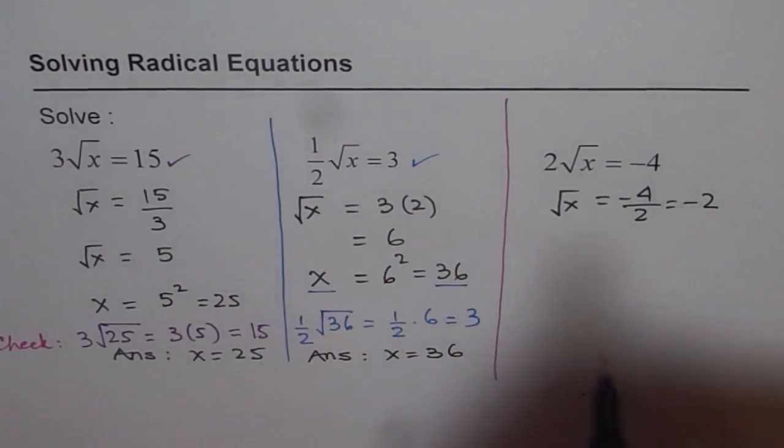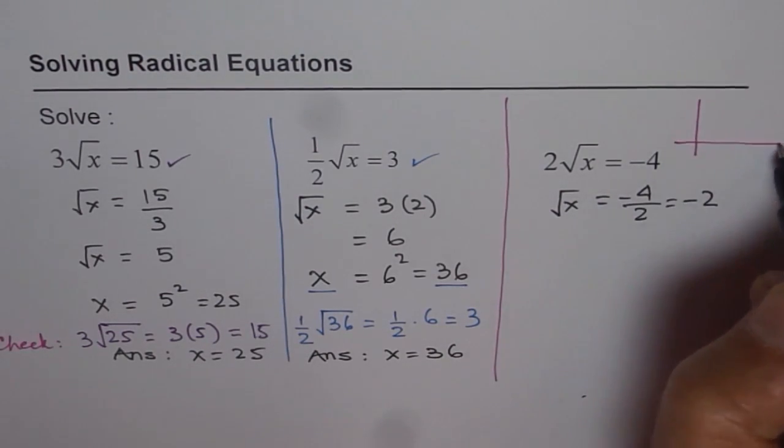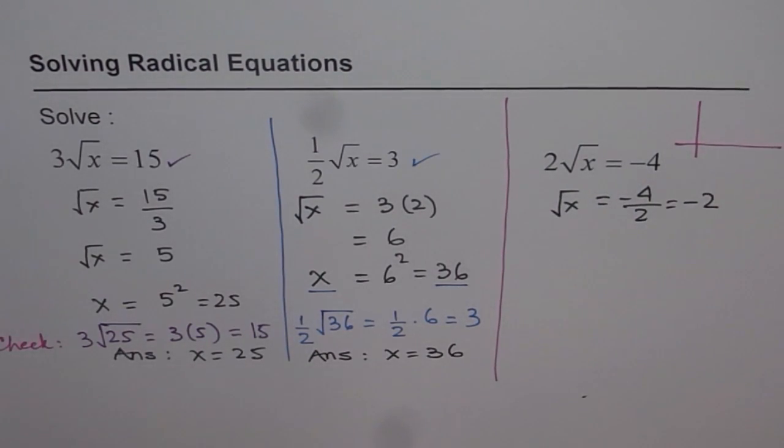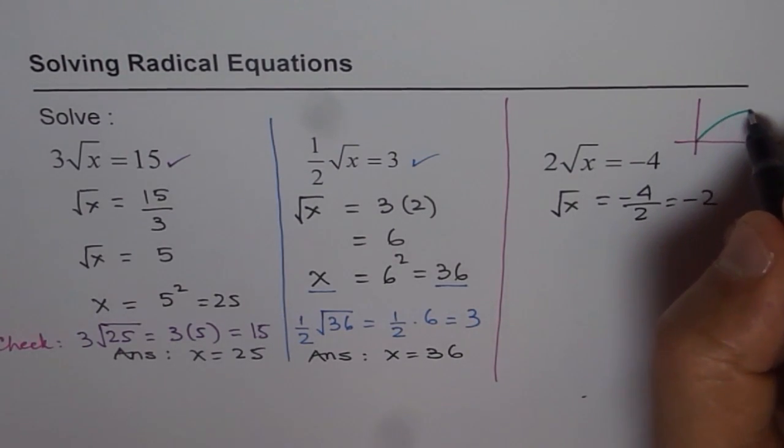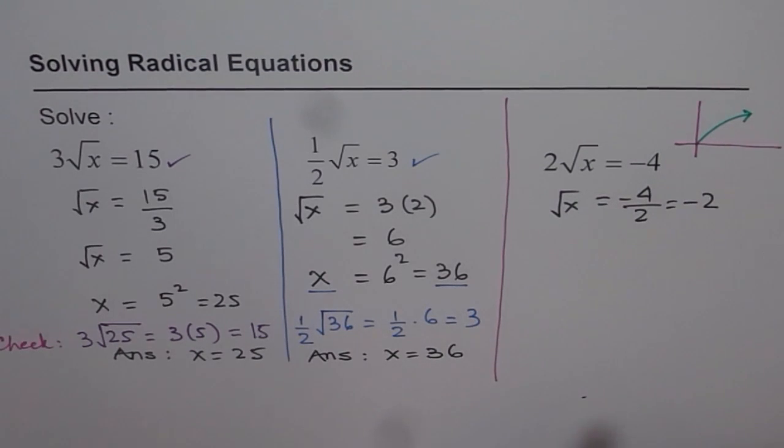You know, square root is always positive. Look at this graph. If you want to sketch the square root function, you will always get positive values. Never negative, correct?